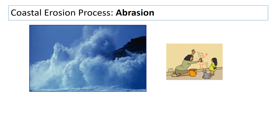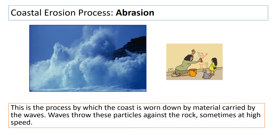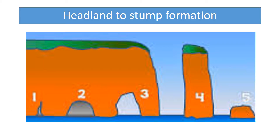The second main process is abrasion. As those waves carry material — stones, bits of sand — that material gets thrown against the cliff, slowly wearing it away. That's called abrasion. Together, the processes of abrasion and hydraulic action erode the headland, particularly the parts sticking out furthest into the sea. Let's look at the different stages of erosion that cause a headland to eventually form a stump formation like we'd see at Old Harry Rocks.